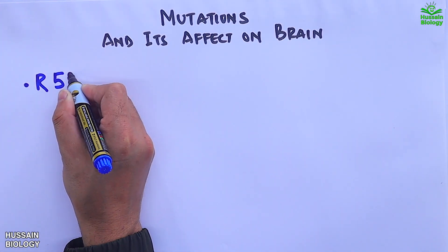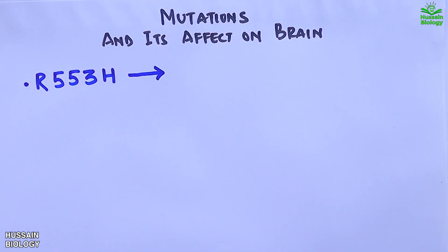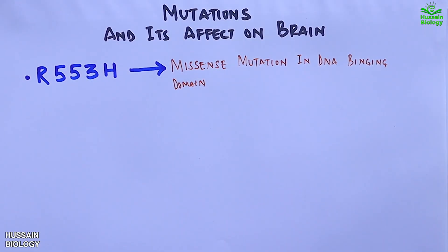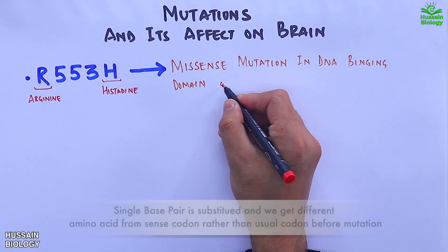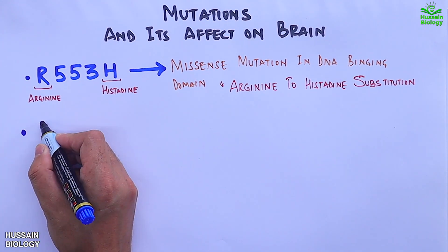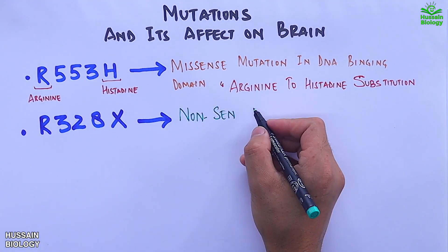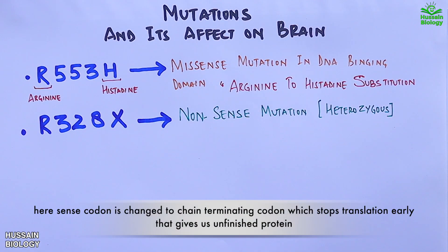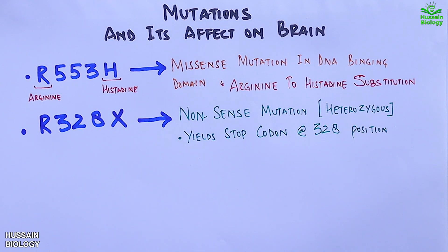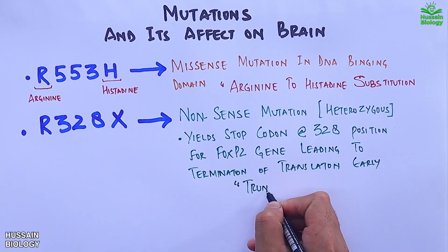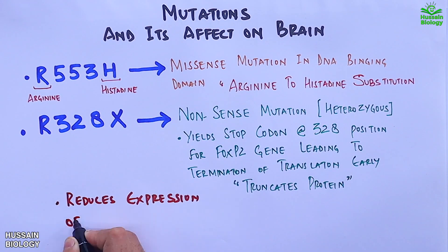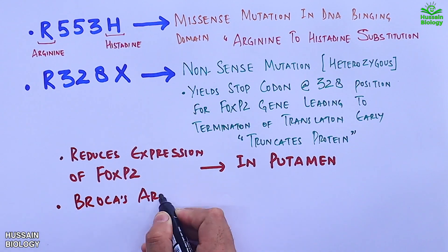There are two key mutations of FOXP2 gene. First is R553H, a missense mutation in the DNA binding domain of FOXP2 protein, where an arginine-to-histidine substitution takes place. Second is R328X, a nonsense heterozygous mutation that yields a stop codon at position 328, leading to early termination of translation and truncation of the protein.